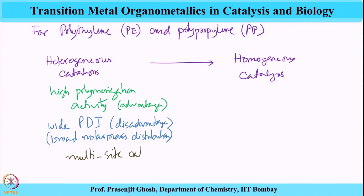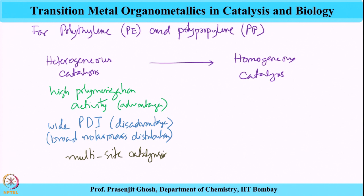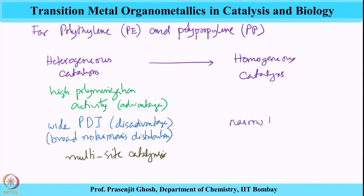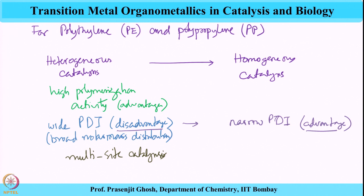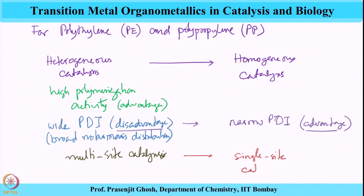Hence, the efforts were on to move to homogeneous catalysis. The exactly opposite attributes were wanted — for example, narrow PDI, which turns out to be the advantage. This disadvantage of broad PDI can be converted to an advantage. Similarly, homogeneous catalysis offered single-site catalysis, which is also considered to be an advantage.